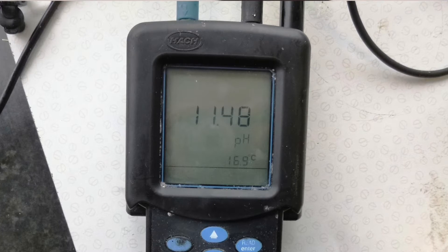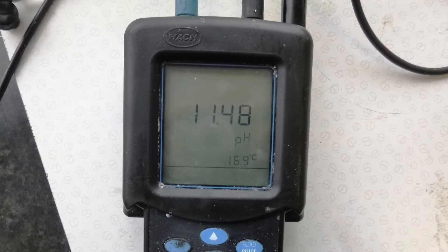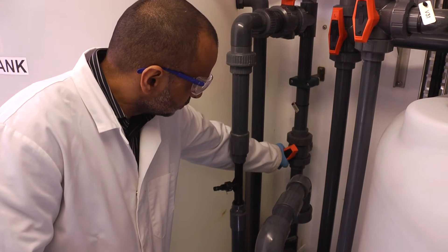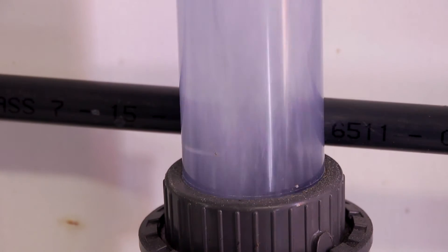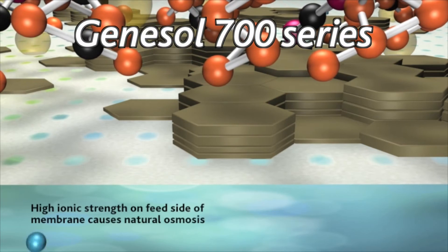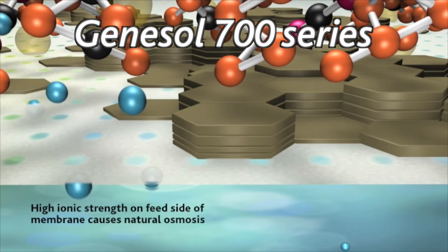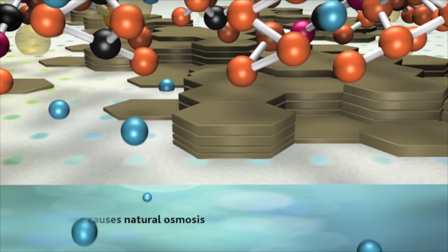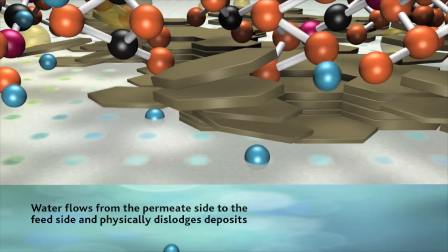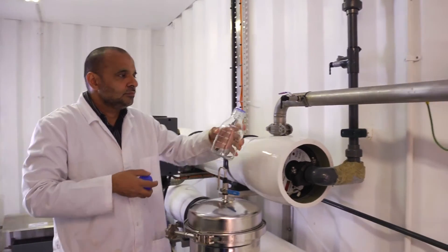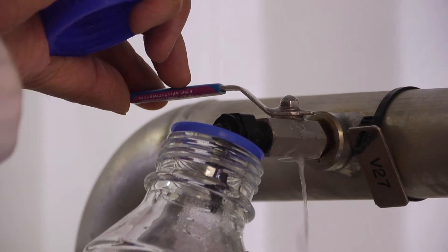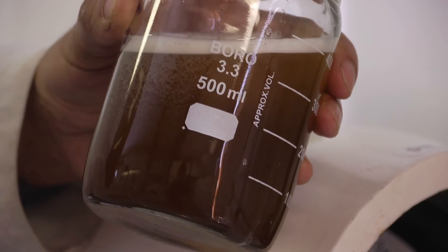Adjust pH and temperature to comply with the manufacturer's guidelines. Recirculate the cleaning solution for 30 minutes. Soak the membranes for 30 minutes to determine the extent of organic fouling. During soaking, normal osmosis causes permeate flow back through the membrane, loosening deposits. If the solution becomes discoloured, discard and make up a new batch. Repeat 2 or 3 times depending on the extent of the fouling.